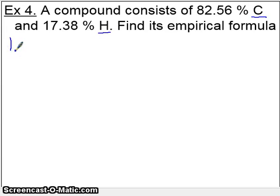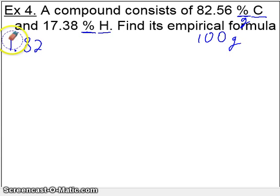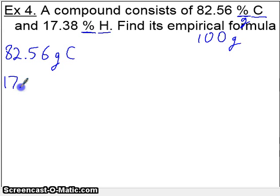Step number one, percent to mass. This is the easiest step of all. Essentially what you do is you take your percentages and convert them into grams. The reason you do this is because you're assuming that you have 100 grams of the compound. If you have 100 grams of the sample, and if 82% of it is carbon, then you have 82 grams of carbon. We'll do 82.56 grams of carbon and 17.38 grams of hydrogen. Step one is complete.